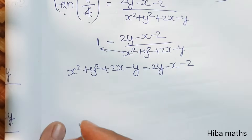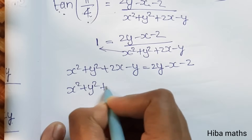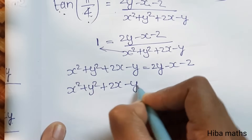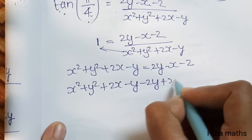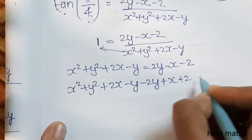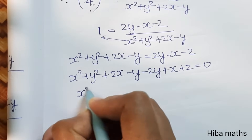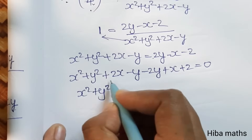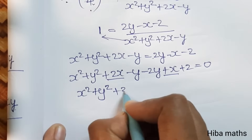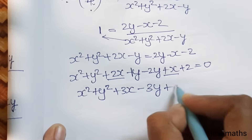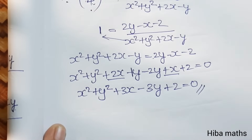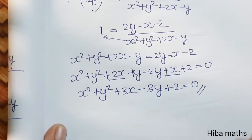Rearranging: x square plus y square plus 2x minus y, bringing 2y to the left gives minus 3y, bringing minus x to the left gives plus x (so 2x plus x = 3x), and bringing minus 2 to the left gives plus 2. Therefore x square plus y square plus 3x minus 3y plus 2 equals 0. This is the required equation. Step by step it is very easy to solve. Thank you so much for watching.